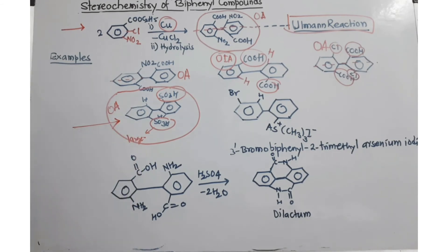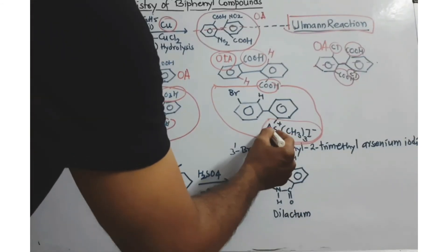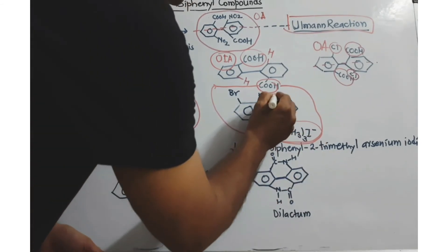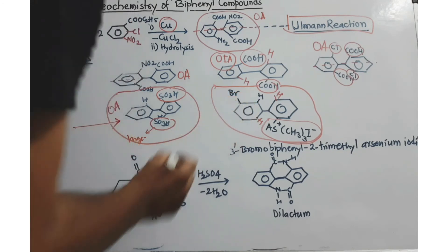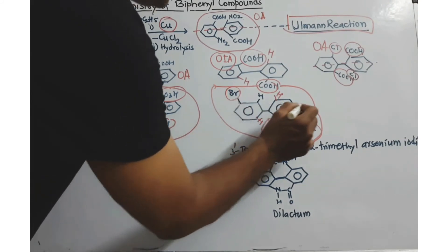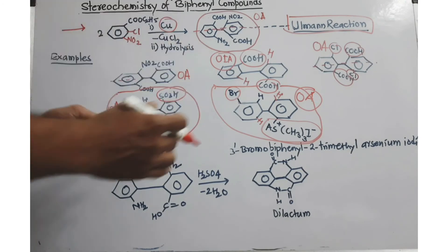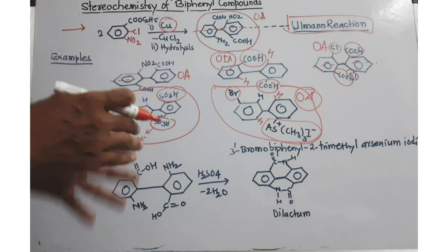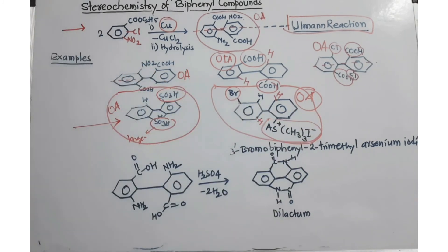You must remember this example. One more example to consider: there is just one substituent — a trimethyl arsenium iodide group at the ortho position — and a bromine at the meta position. Because of this very large group the rotation is restricted, and because of the bromine, the plane of symmetry is destroyed in that ring. So this compound is optically active. These two examples show that if a substituent is large enough — like SO₃H or trimethyl arsenium — just one or two substituents can restrict rotation and the compound can show optical activity.